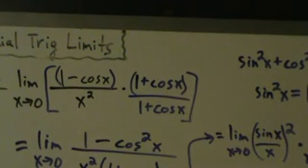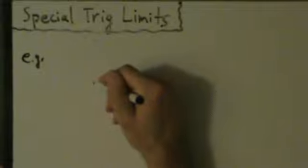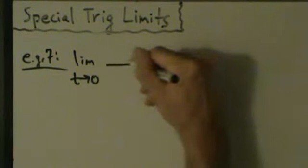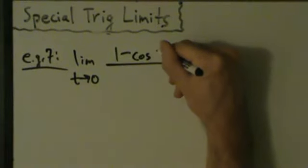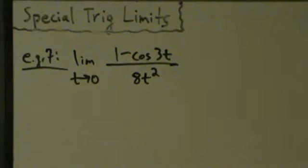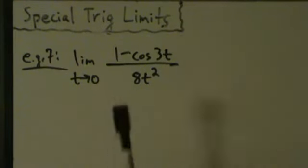Let's see one more example that's kind of like example 6 but just a little more complicated. We're actually going to use the result from example 6, so example 7 won't be that long. Example 7: take the limit as t approaches 0 of 1 minus cosine of 3t divided by 8t squared. This kind of looks like example 6 — before we had x, x, and x squared, but now we have t, 3t, and 8t squared.